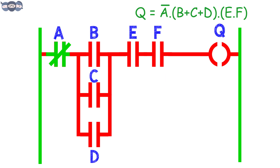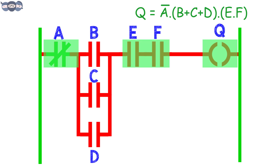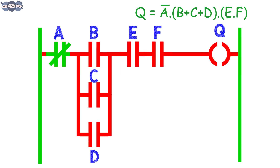Now let us simulate this ladder. The output will turn HIGH when a is LOW, e and f are both HIGH, and any one or all of b, c and d are HIGH. If you have clearly understood this example, let us move to the next example.